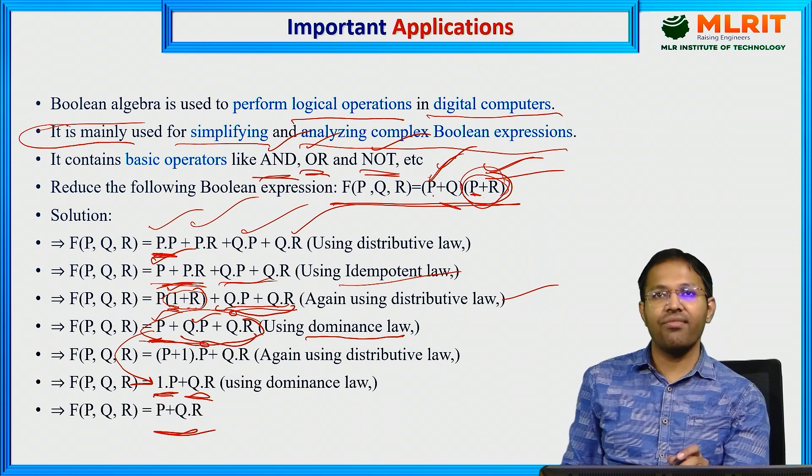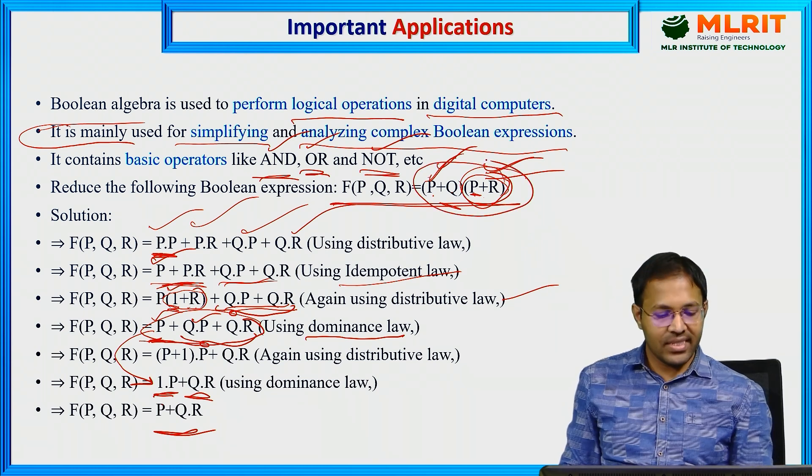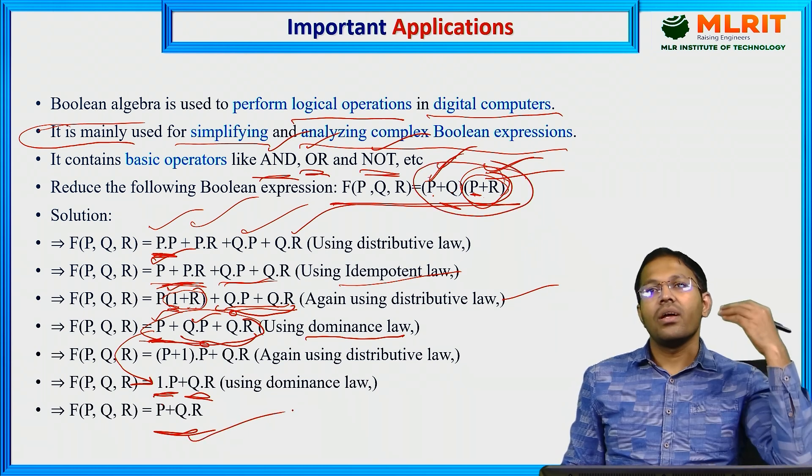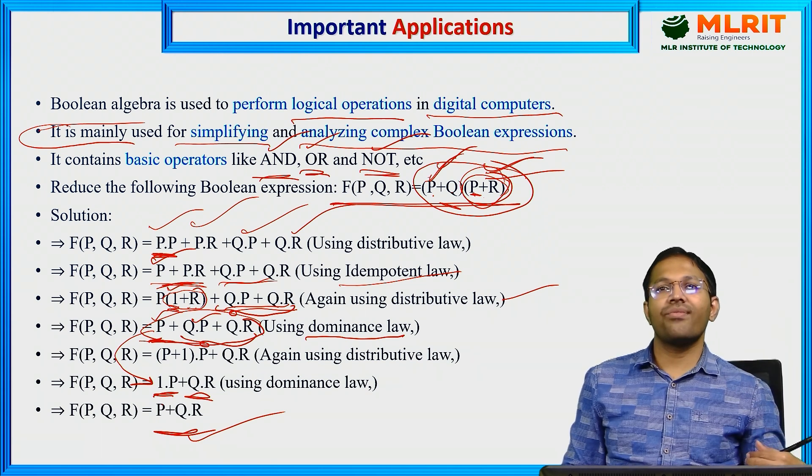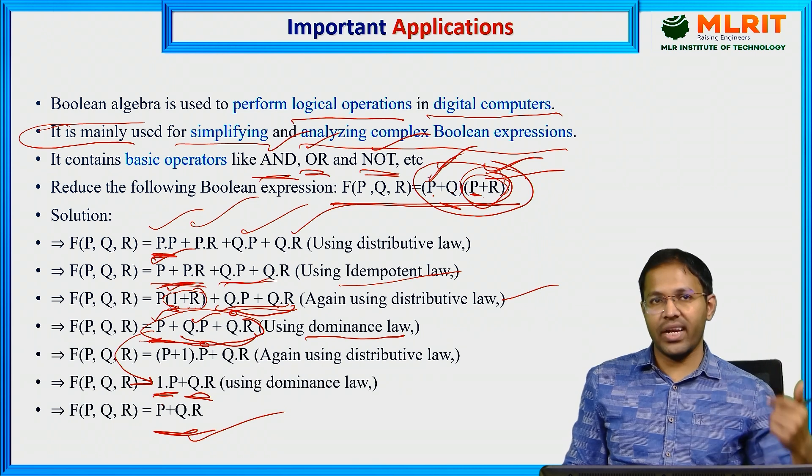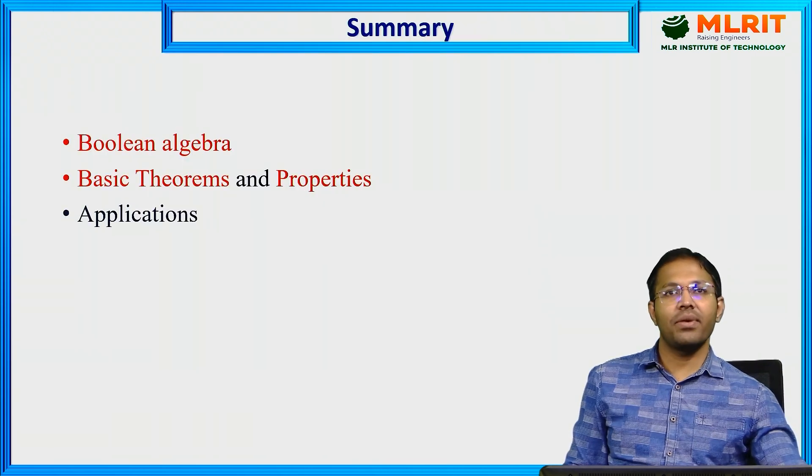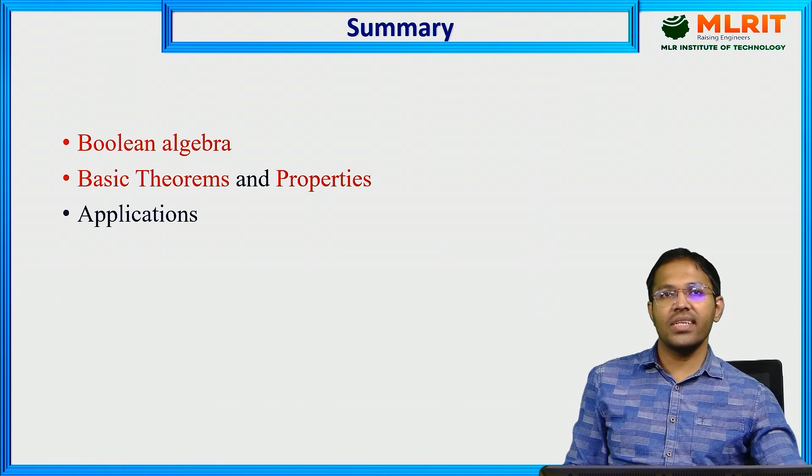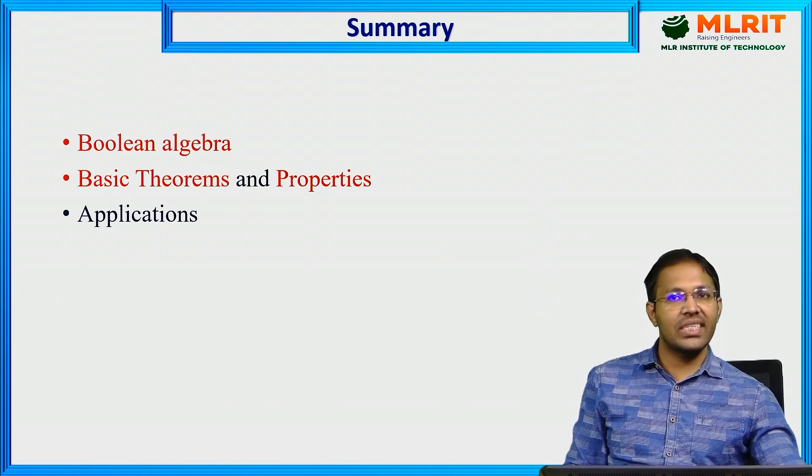Now if you see, this was the expression and this is the simplified expression. When we go for simplified expression, the amount of hardware that is involved to perform the computation is also reduced. Hence it is an advantage. We have seen Boolean algebra, its basic theorems and properties. We have also seen applications. That is all for today's class. Thank you.